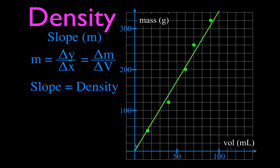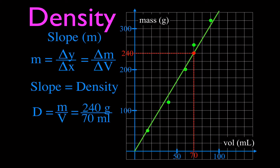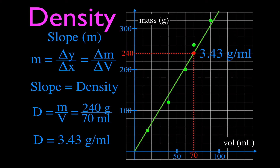Now we're going to calculate the slope. The line goes right through the origin, so we start at zero. I'm going to pick a point on the line to use in our density equation: density equals mass divided by volume. I choose a point where it crosses the grid clearly — volume is 70 milliliters and mass is 240 grams. Taking 240 divided by 70, the slope of that line — the change in y over the change in x — gives a density of 3.43 grams per milliliter. I'll note that right there as the density calculated from the slope.